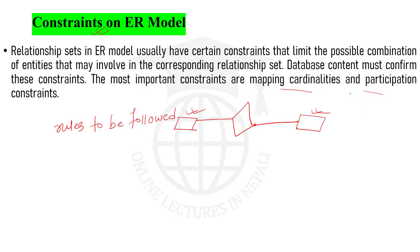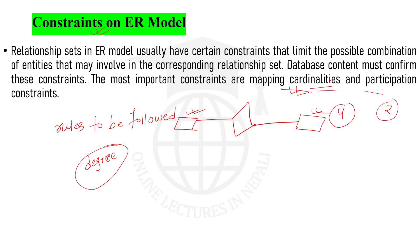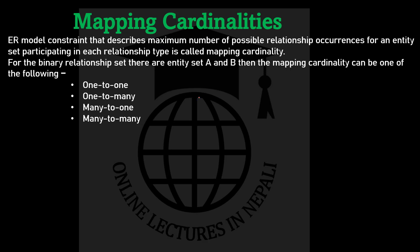There are two types of constraints: mapping cardinalities and participation constraints. When we define a binary relationship, we can classify relationships on the basis of mapping cardinalities into four types, and on the basis of participation constraints into two types. Mapping cardinality is especially useful in describing binary relationships — that is, relationships between two entity sets.